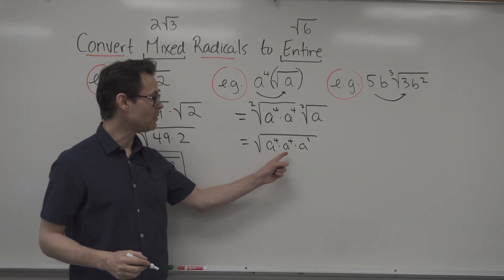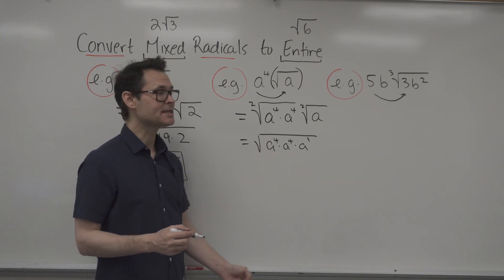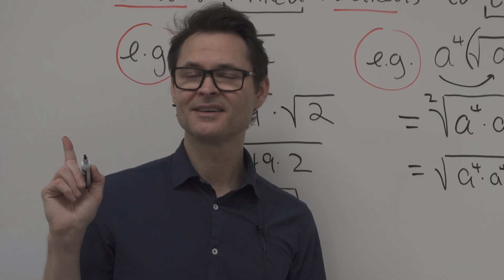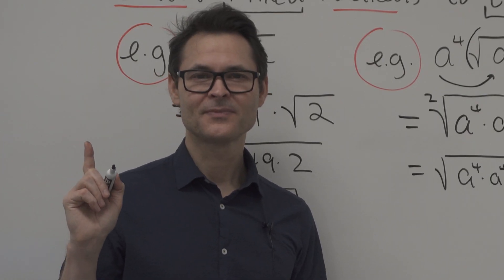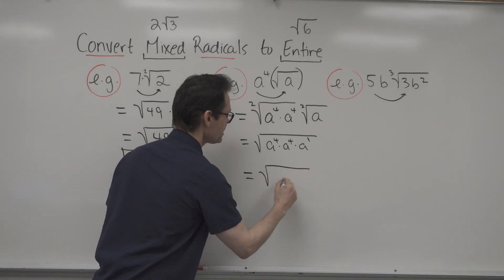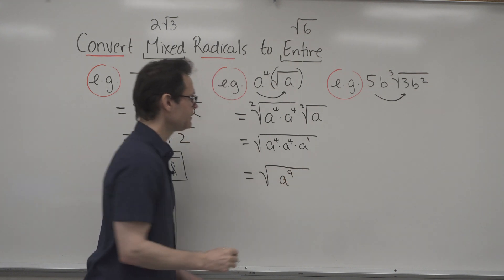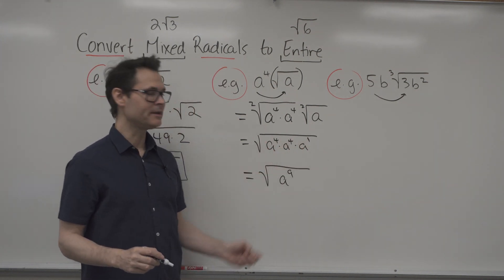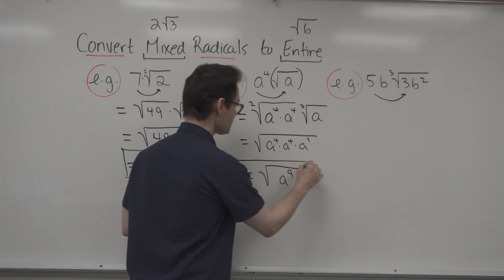And now I'm just multiplying powers with the same basis. I just add the exponents. And so equals the square root of A to the 9. 4 plus 4 plus 1 is 9. And that's a nice way to write your final answer.